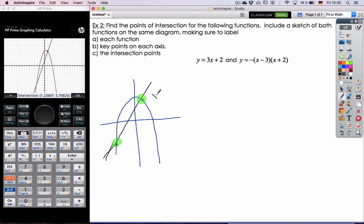So we can label it as 1.23. That looks right. And 5.708.